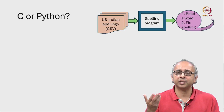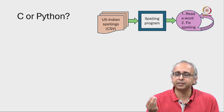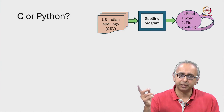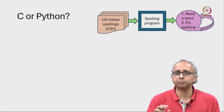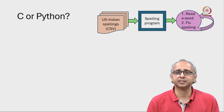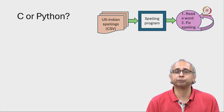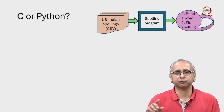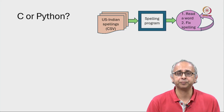We imagine that this program will repeatedly ask for a word, it will look up the spelling, and if it's not there in the dictionary it would report it as is, but if it's there it will use that to fix the spelling and then loop back and ask for another word.